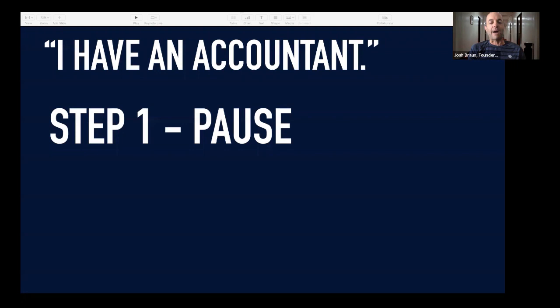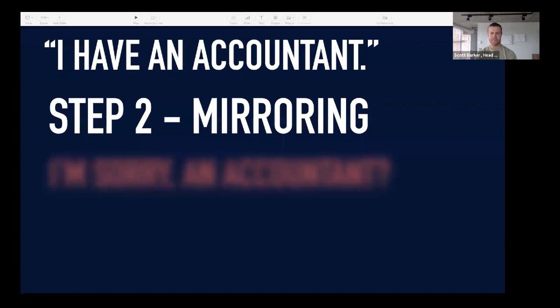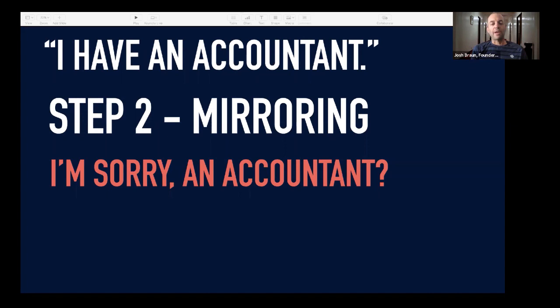Then in a calm voice, you're going to try to get some more information from the person. This is a technique called mirroring that Chris Voss talks about. Mirroring is a really simple technique where you repeat the last two or three important words that someone said with a slight uptone. So Scott says 'I have an accountant,' and I would say, 'I'm sorry — an accountant?' When you do this in your personal or business life — and I thought it was a little hokey when I first learned it — people will just keep talking. They'll give you more information, because it gets back to people feeling like you're actually trying to understand them rather than overcome them.